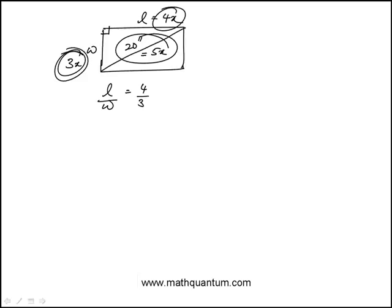This is the 3, 4, 5 triangle, which means x is 4, because 5x is 20.